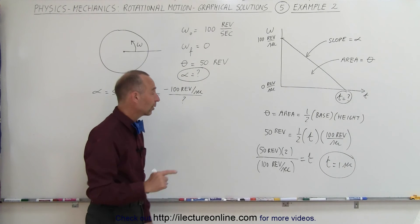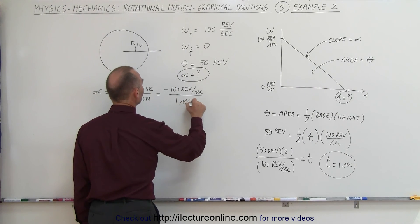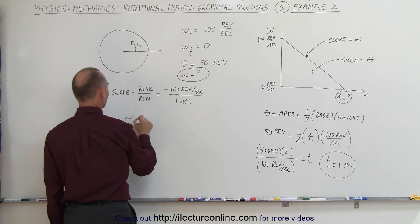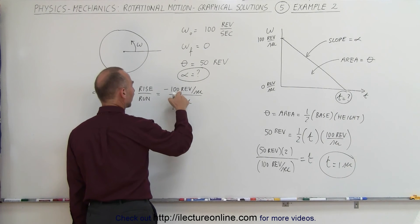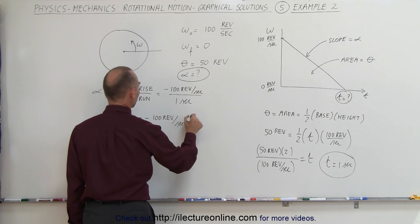Now that we know that the elapsed time is one second, we can plug that in here. And so we write one second. Therefore the angular acceleration is minus 100 revolutions per second per second, or minus 100 revolutions per second squared.